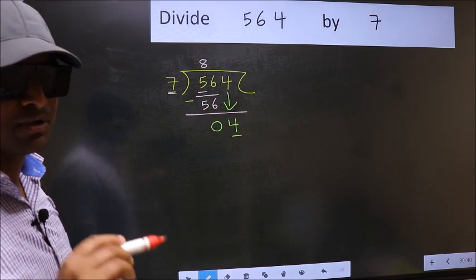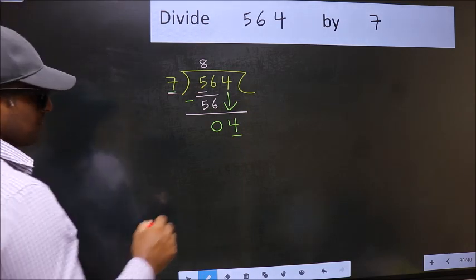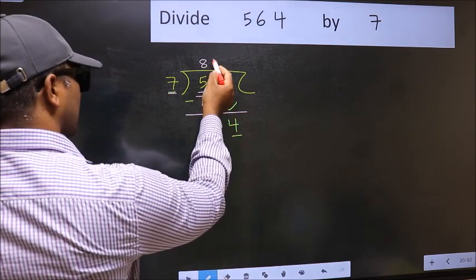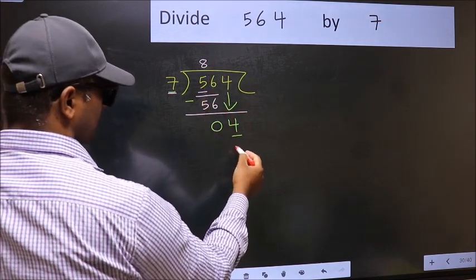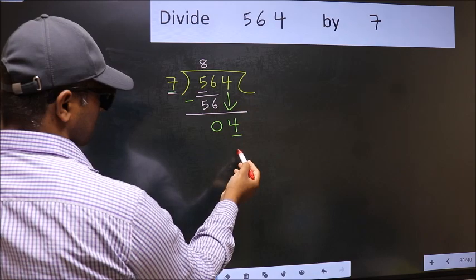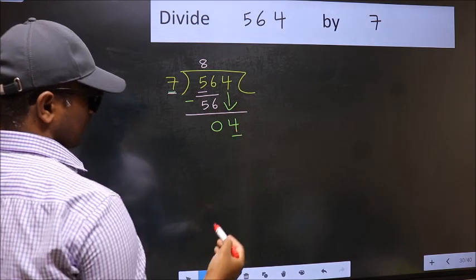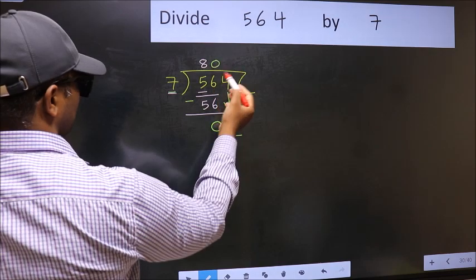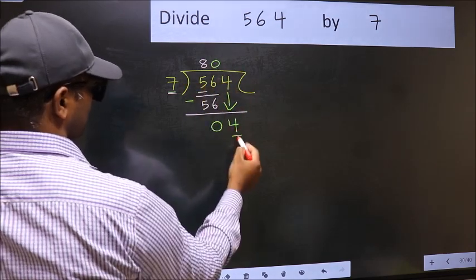Instead, what you should think of doing is, what number should we take here? If I take 1, I will get 7. But 7 is larger than 4. So what we should do is, we should take 0. So 7 into 0, 0.